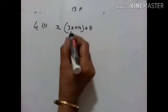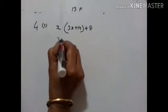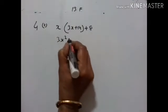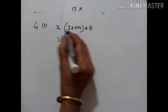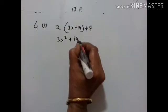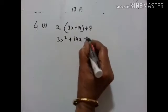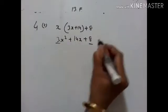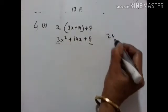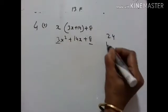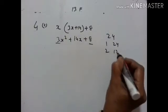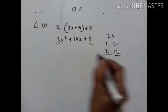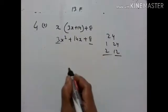X into 3X is equal to 3X² plus X into 14, giving 14X plus 8. Now 3 times 8 is 24, and 2 and 12 give us 14.